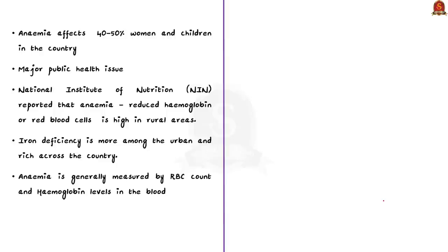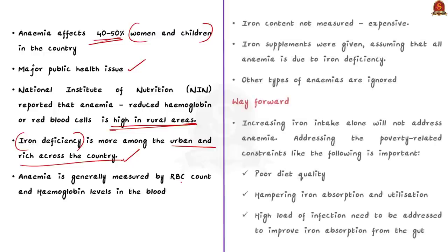According to various surveys, anemia affects almost 40-50% of women and children in the country. So, it is a major public health issue. According to the scientist at the National Institute of Nutrition, NIN, anemia is higher in rural population. But, when we are talking about iron deficiency anemia, it is more among the urban and rich across the country. So, in short, anemia due to reduced blood cells or hemoglobin is higher in rural areas, whereas iron deficiency anemia is more in urban areas and rich people.